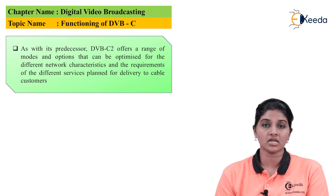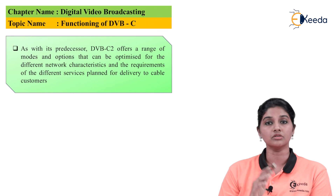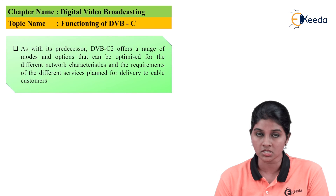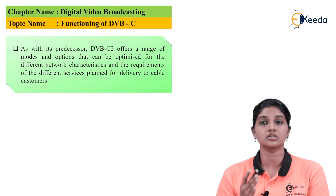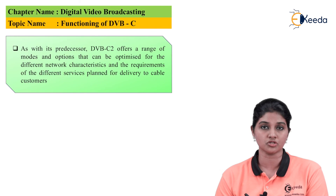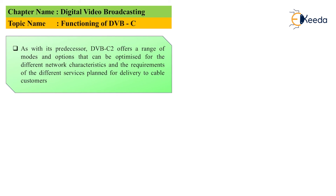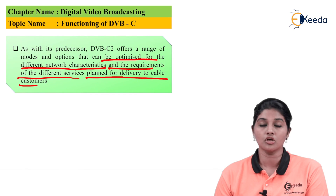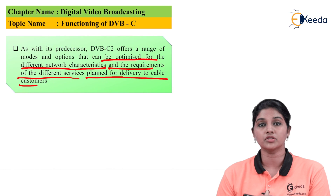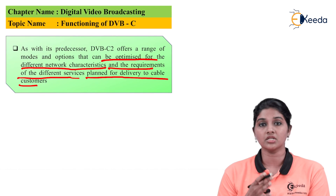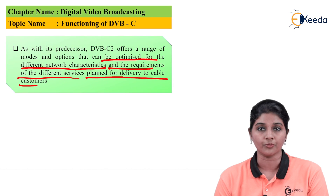DVB-C2 is a modified version of DVB-C providing additional features and services to fulfill the requirements of both service providers and users. Networks can be optimized for different characteristics and the requirements of different services planned for delivery to cable customers, making it possible that DVB-C may eventually be overcome by DVB-C2.